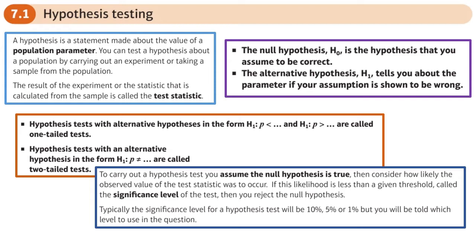A hypothesis test is basically finding out if something has changed. That's what it is — finding out if something has changed. So has the mean changed, or has the probability changed? For example, if a shop was selling sandwiches and 20% of people bought them, and they introduced a new recipe, does that mean more people are now buying sandwiches? Has the probability increased or decreased from 20%? Basically, is there evidence to show that something is changing?